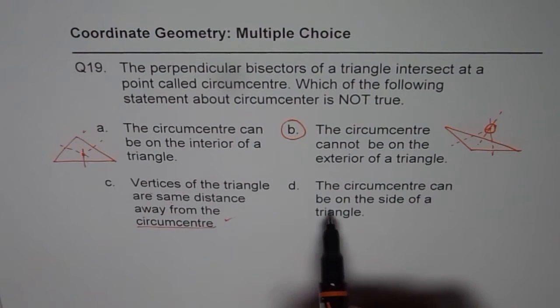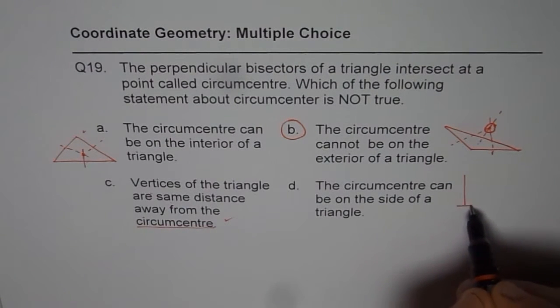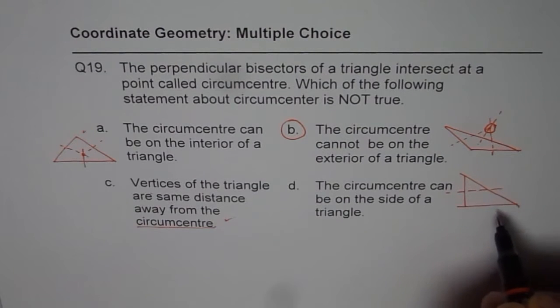The circumcenter can be on the side of the triangle. That is the case when you have a right triangle, right? So in case of a right triangle, it is on the side. So for example, right bisector will be here.